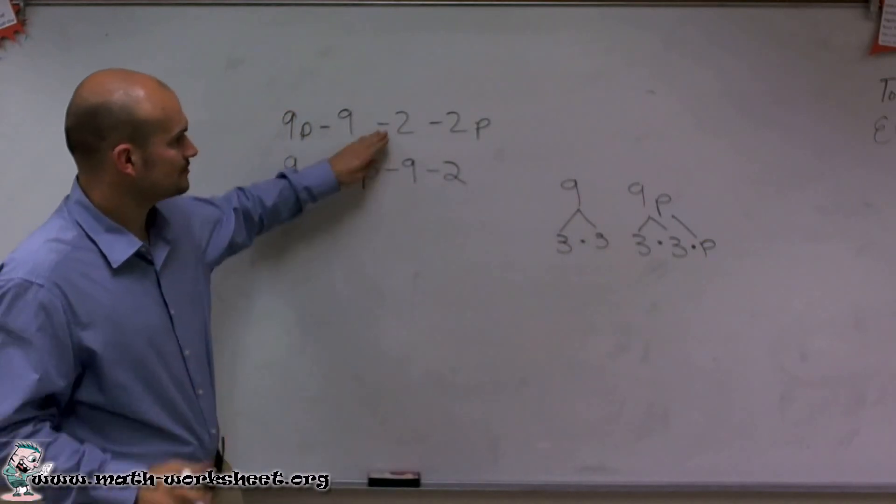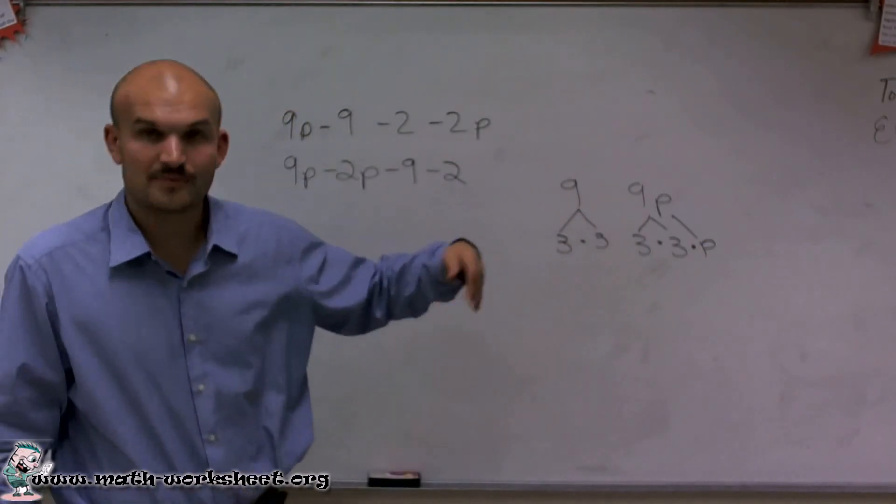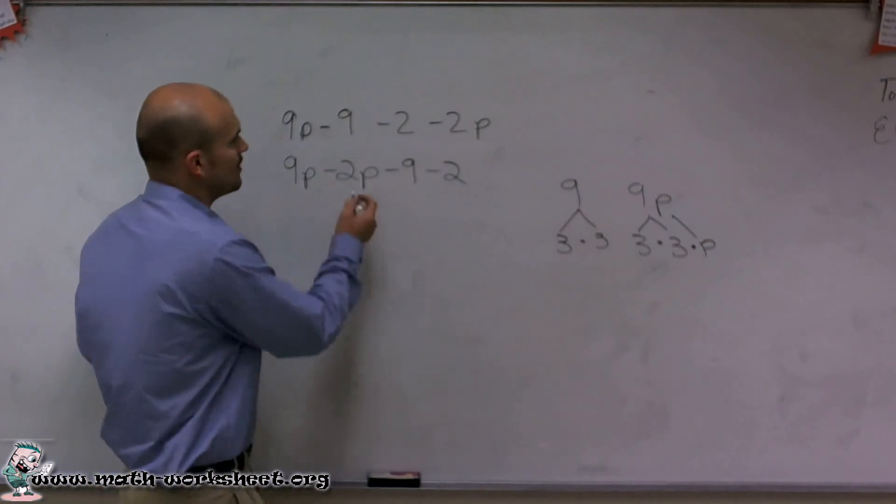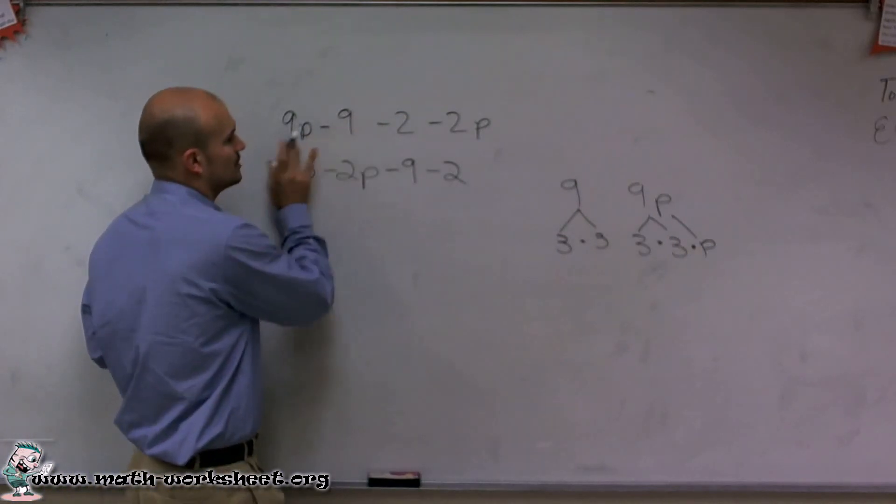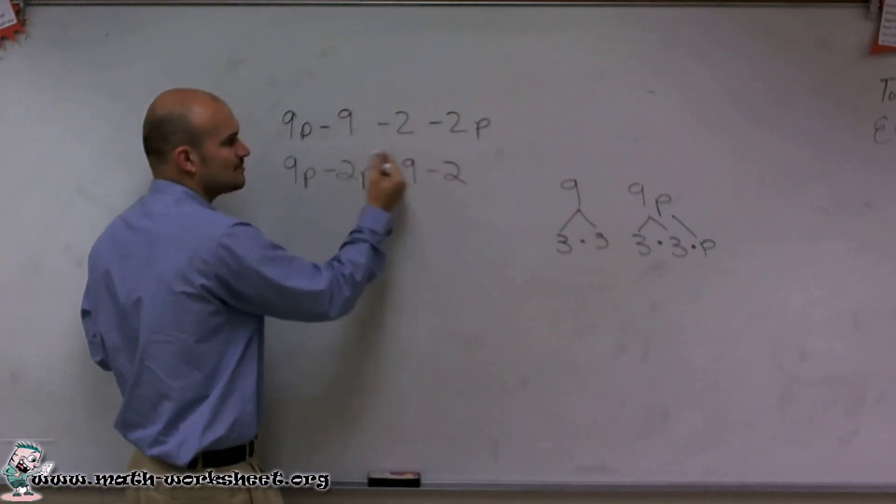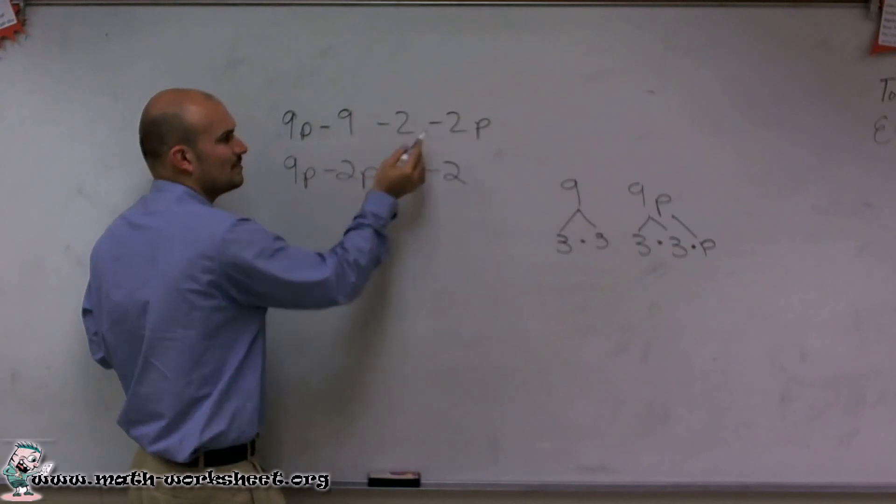Notice how I took, or actually not associative property, but commutative property. But notice how I took the signs of each one of those and I just rearranged the negative 2p in front, but it's still negative.